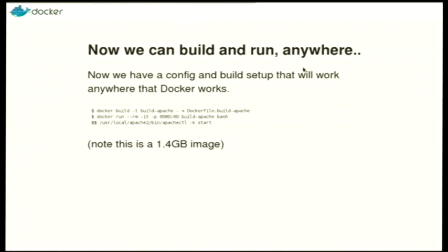The fun thing about that is you now have a build with all the prerequisites in Debian — you can do the same for CentOS and whatever — and you can run it. You can see the run command there, setting it up on port 8080 on your local machine. In this case, I've decided to start it manually because I was probably debugging something.